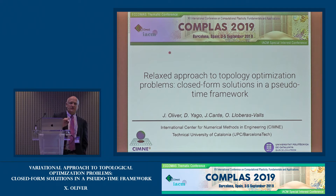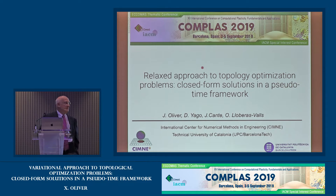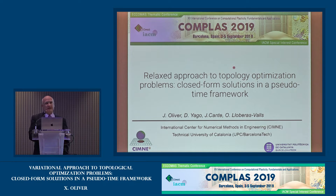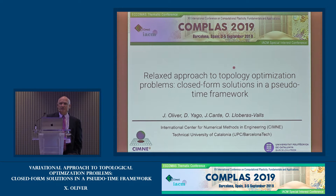My topic today is not going to be exactly computational material design, but something that is used in computational material design, which is topology optimization. Topology optimization is a very relevant topic in computational mechanics. I recently checked one of the most important journals in our field, a general purpose journal, and found that out of the most downloaded papers, 20% were related to topology optimization topics.